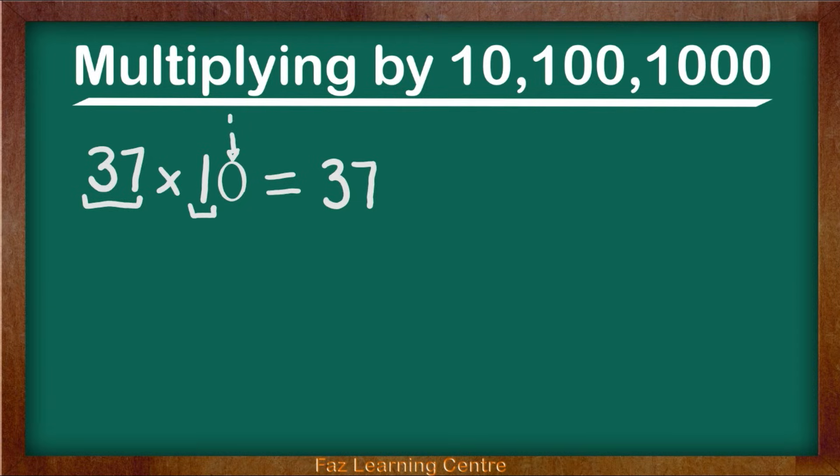How many 0's do we have? 1 0. So we will be dropping 1 0 because 10 has 1 0.